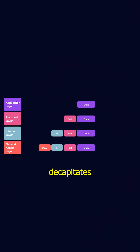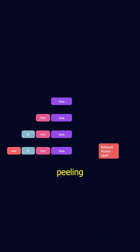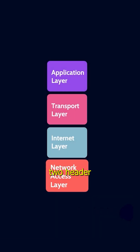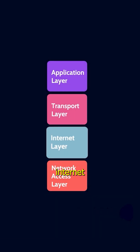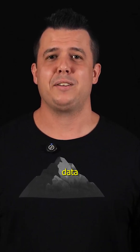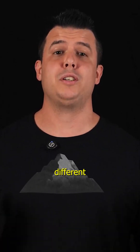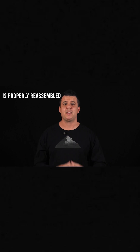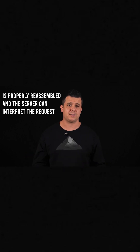Once these frames reach the server, the server decapsulates them by peeling off each layer of information in reverse order, starting with the layer 2 header and then moving through the internet layer and the transport layer until the original data is eventually revealed. This process ensures that the data from a bunch of different packets is properly reassembled and the server can interpret the request.